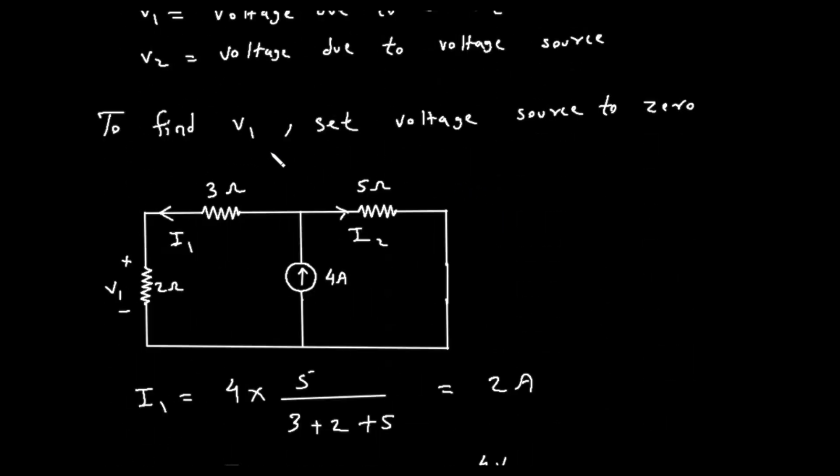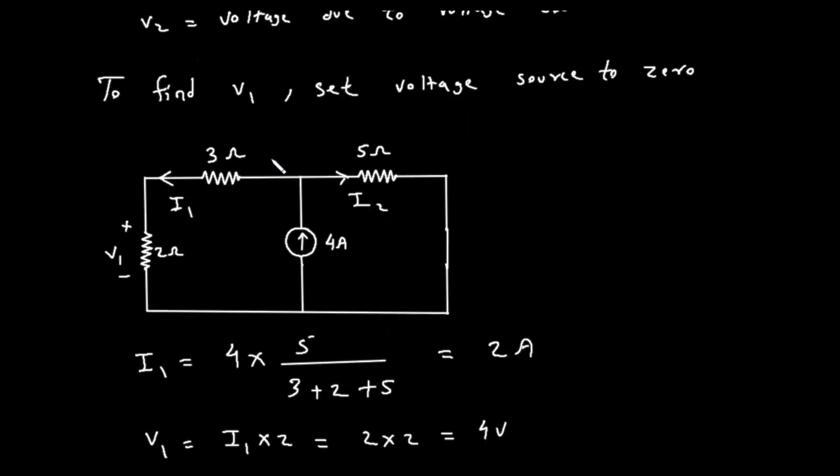Step 1, find V1, effect of the current source. To find V1, we consider only the 4 ampere current source and set the 10 volt voltage source to zero. Setting a voltage source to zero means replacing it with a short circuit, which is just a wire.